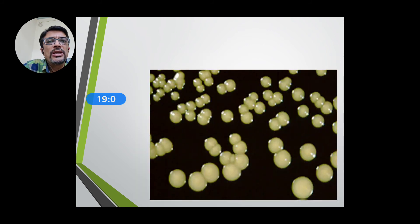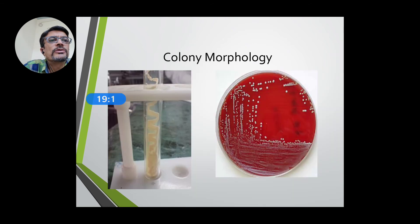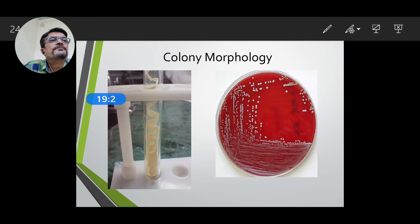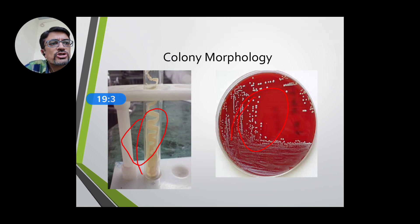Sometimes even biopsy can be done. Culture is done on Sabouraud dextrose agar. The colony is creamy, moist — unlike other fungi which produce velvety or filamentous colonies, Candida colony looks just like a bacterial colony: white, creamy, and moist. On Sabouraud dextrose agar and on blood agar it has a typical curd-like smell. That is the colony of Candida.